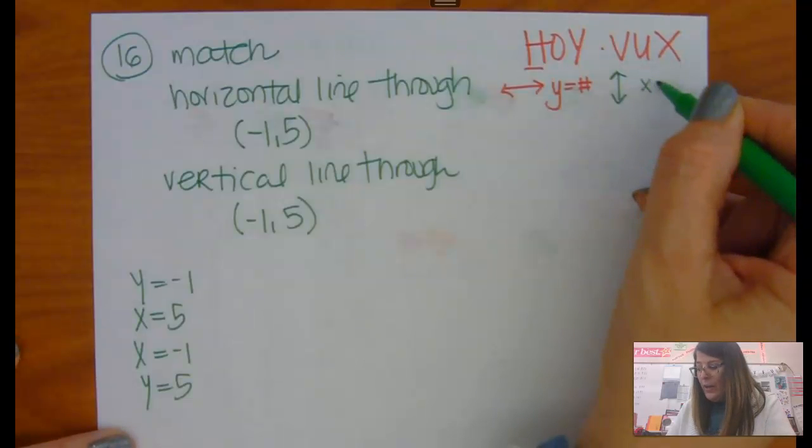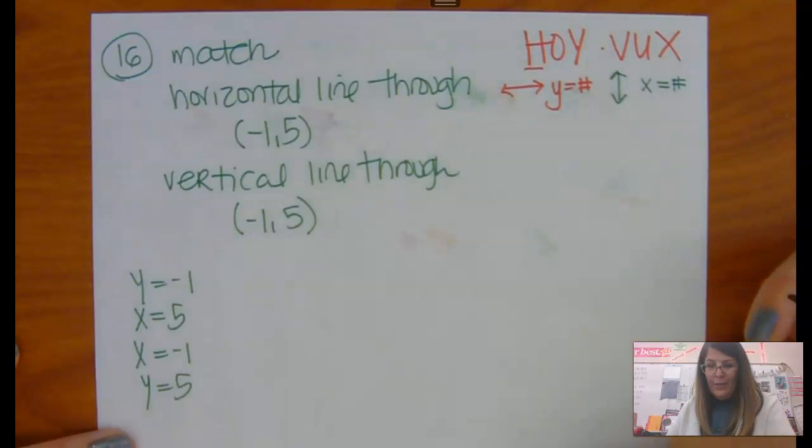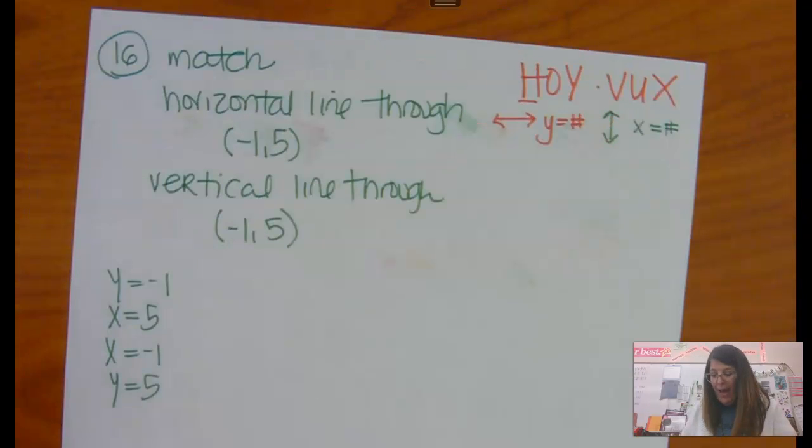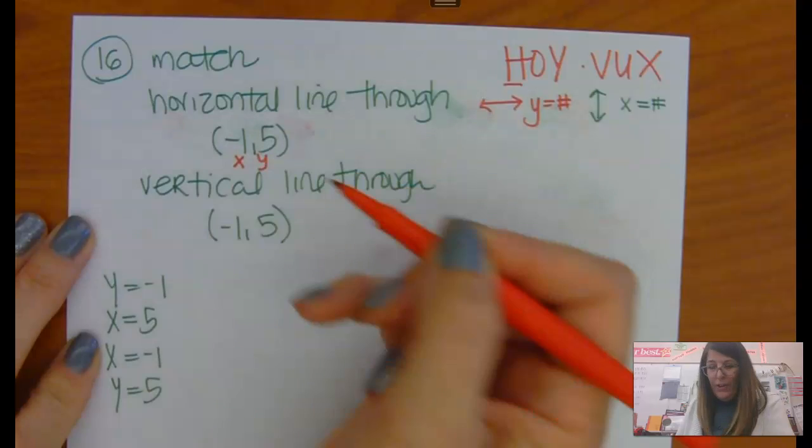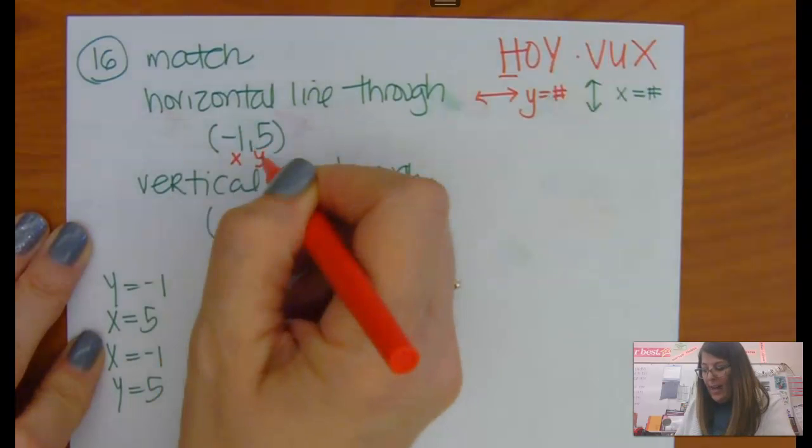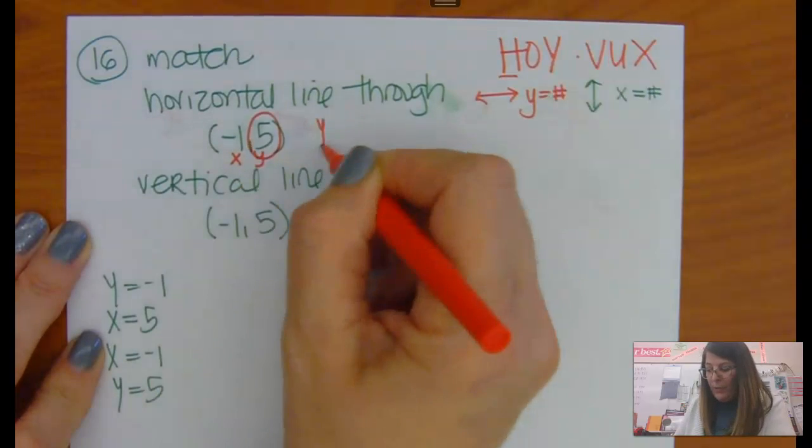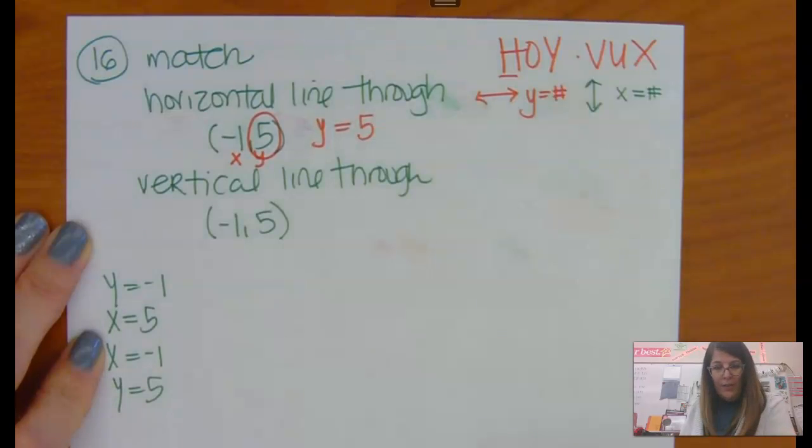And then the equation is just x equals some number. So if I'm asking you what's a horizontal line equation going through this, horizontal, it's going to be y equals. So y equals whatever's in the y spot.